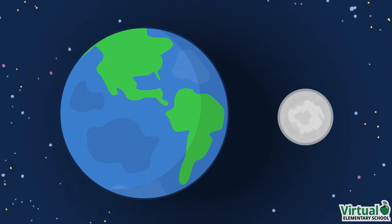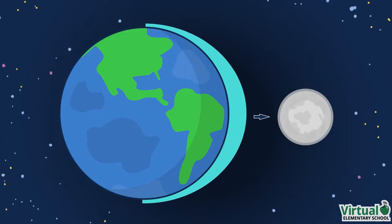The Moon's gravitational force is strongest on whichever side of Earth it is closest to. This pulls water in the oceans towards the Moon, causing the water levels to rise and creating a high tide.